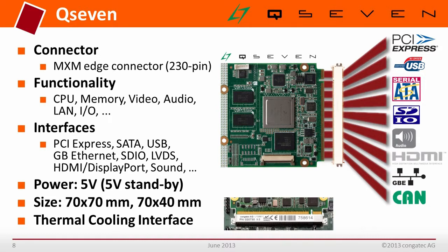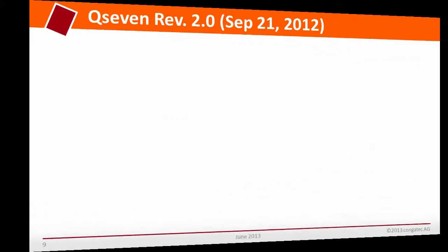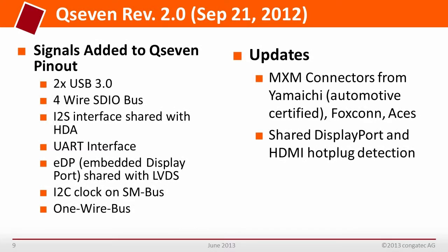With the 2.0 specification, even smaller versions are possible — a 70 x 40 mm form factor is defined as well. USB 3 was introduced as a forward-looking interface, and LVDS can be used for embedded DisplayPort, which is also forward-looking, as VGA and LVDS as video interfaces are predicted to disappear within the next couple of years. One important piece of information is a new connector maker, Yamaichi, which now manufactures MXM connectors for Q7. This connector is completely automotive certified, supporting full extended temperature, high shock, and vibration applications.